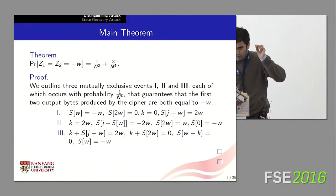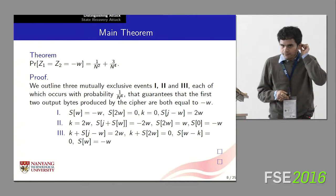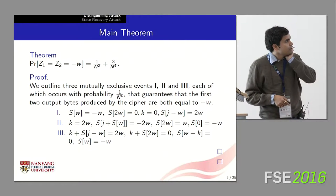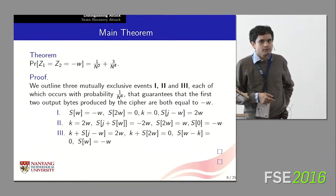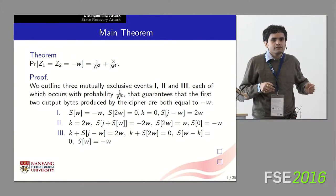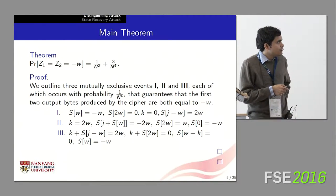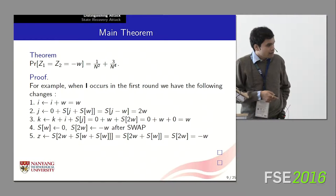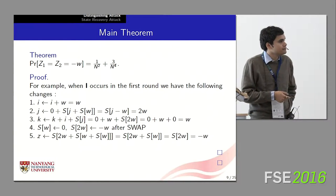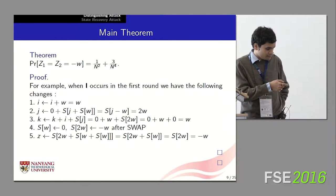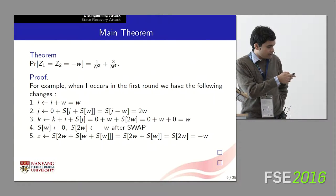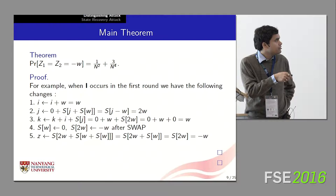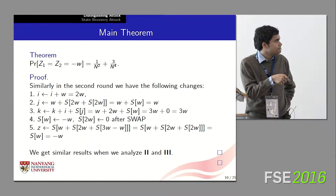To prove this, we outline a set of three mutually exclusive events — one, two, and three. Each of these three events needs to satisfy four conditions, so the probability of each is roughly 1/N⁴. We will show that if the initial state going into the squeeze phase satisfies one of these three conditions, then the first two output bytes are guaranteed to equal −W. For example, when condition one occurs, if we follow the sequence of steps in the Spritz squeeze specification, we can easily find that after the first round, the output byte equals −W.